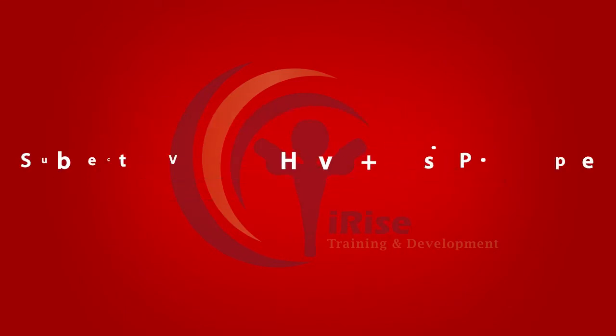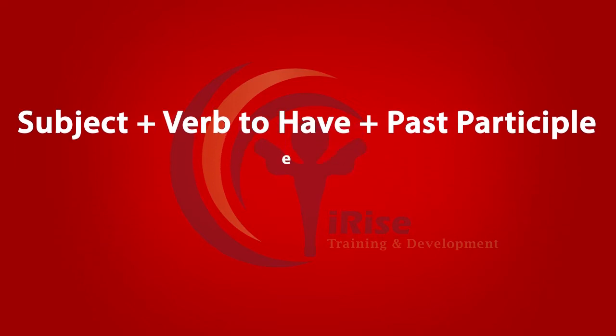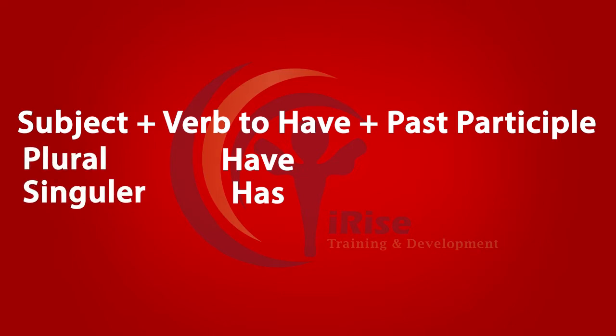The construction of this verb tense is very straightforward. The first element is the verb 'to have' in one of its forms — either 'have' or 'has' depending on the subject. If it's a plural subject, we use 'have', and if it's a singular subject, we use 'has'.